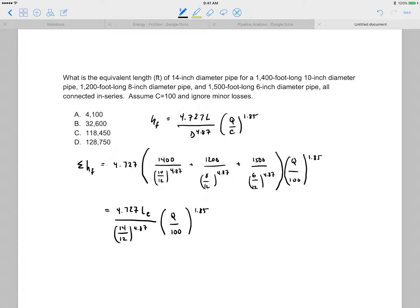We can knock off the Q divided by 100 to the 1.85 from both sides of the equation, and then simply solve for L equivalent. Length equivalent is therefore equal to 118,450 feet of 14-inch diameter pipe. The answer is C.